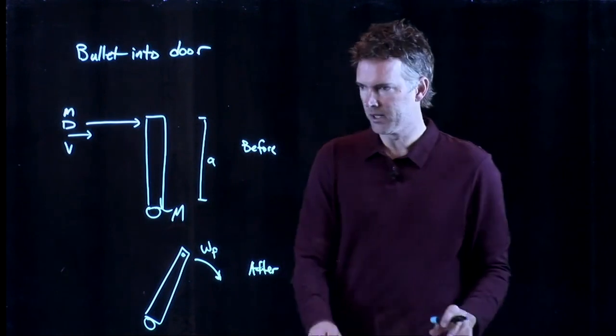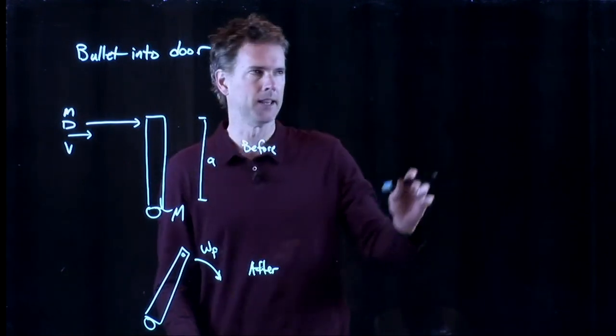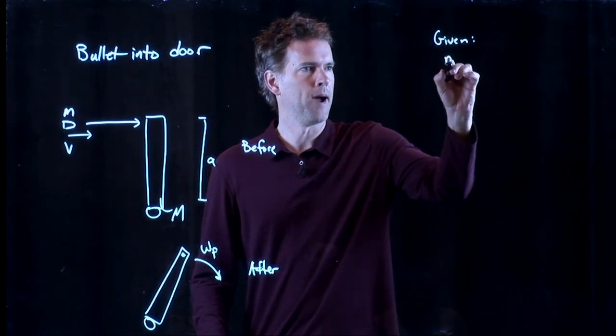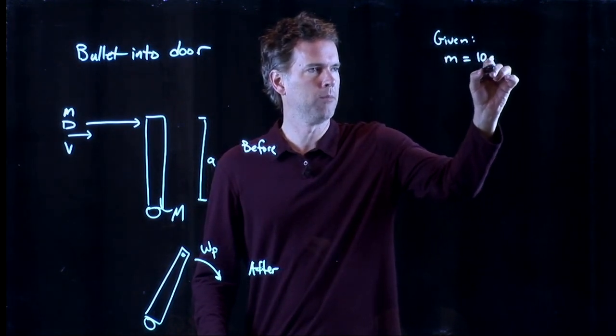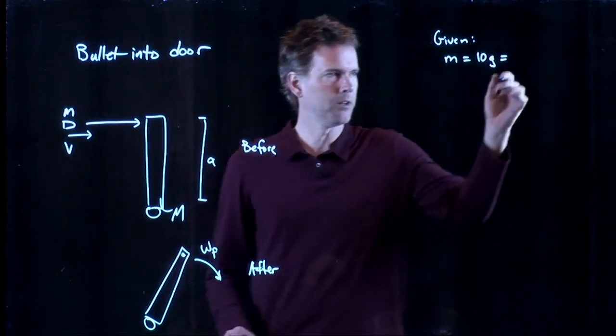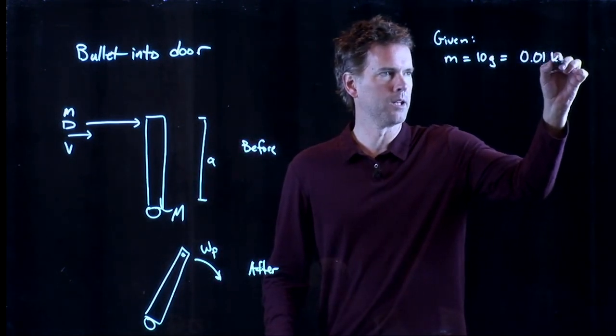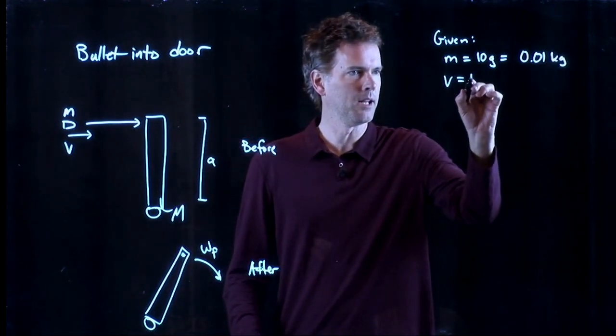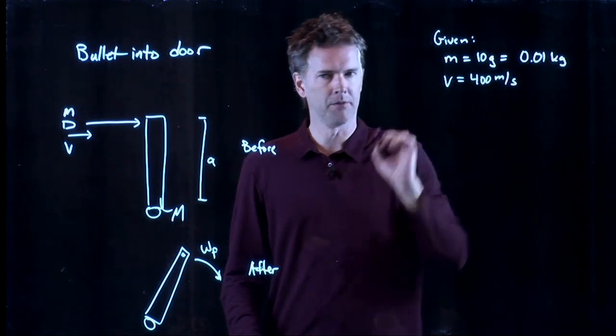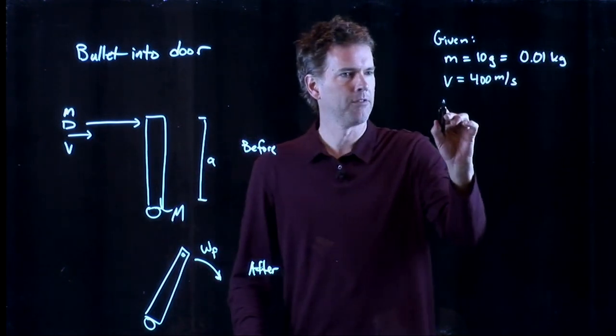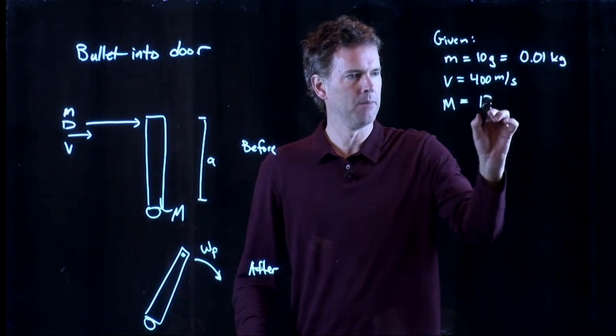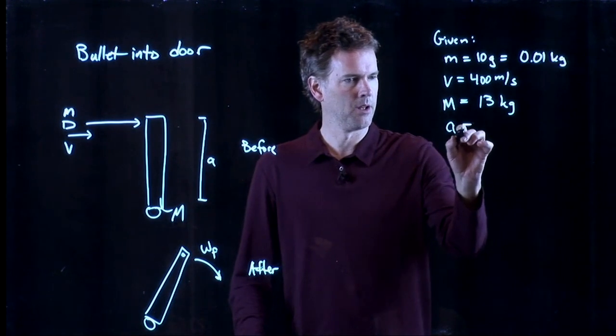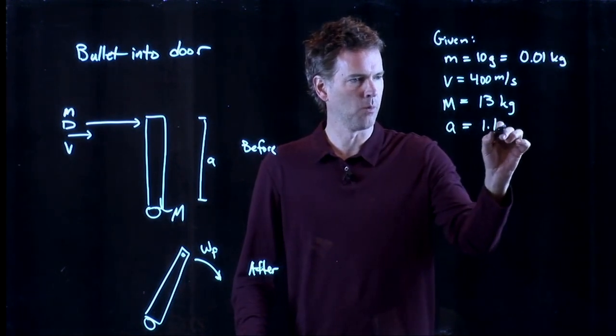And let's give you some real numbers because we're going to plug these in at the end. So the data that we have is the following. Mass of the bullet is 10 grams. In SI units that is of course 0.01 kilograms. The speed of the bullet is 400 meters per second. The mass of the door capital M is 13 kilograms. And the width of the door is 1.1 meters.